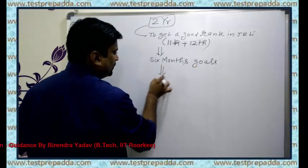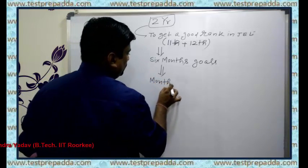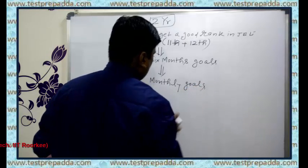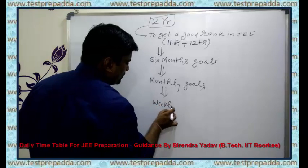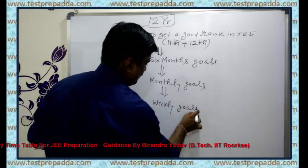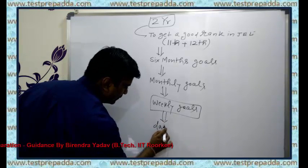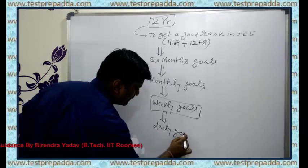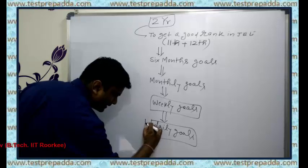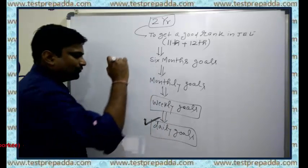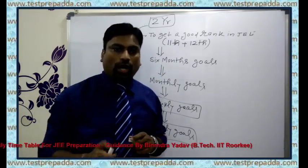Then, those 6-monthly goals should be divided into monthly goals. Monthly goals should be divided into weekly goals, and weekly goals should be divided into daily goals. This daily goal is what you have to prepare every day.